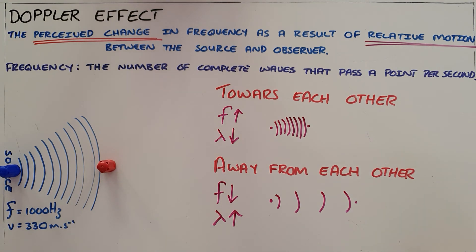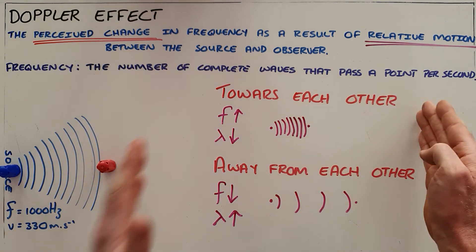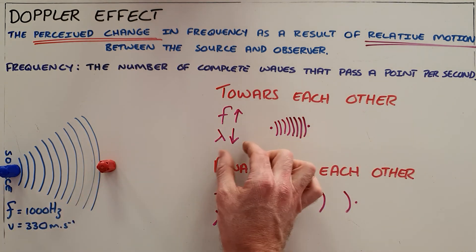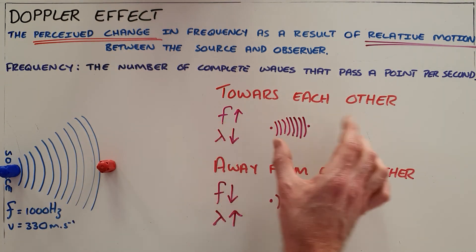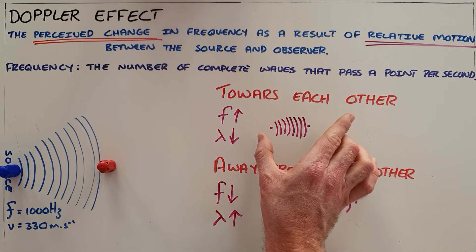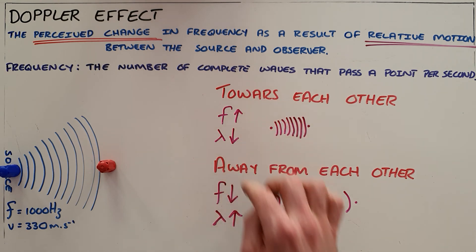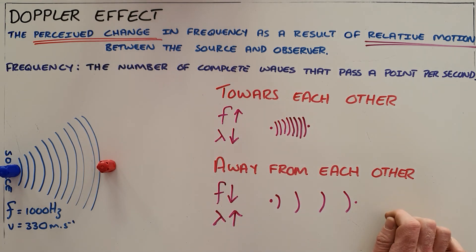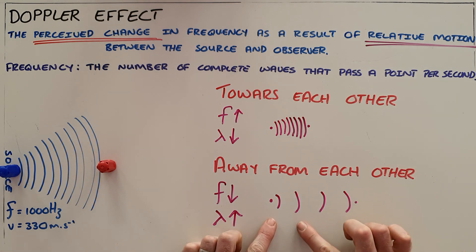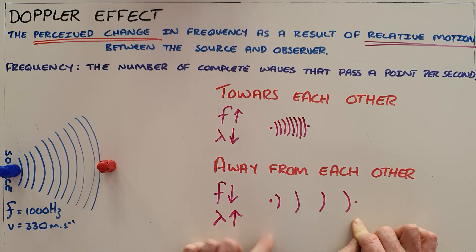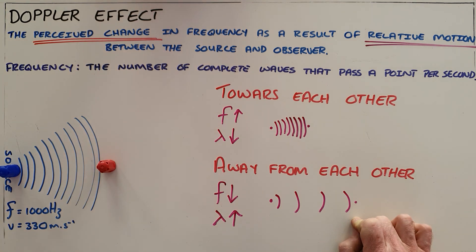So once again, the Doppler effect is a perceived change in frequency as a result of relative motion between the source and the observer. When the source and observer move towards each other, the wavelength decreases and the frequency increases because those waves appear to compress and get closer together. As they move away from each other, the wavelength increases and correspondingly the perceived frequency decreases.